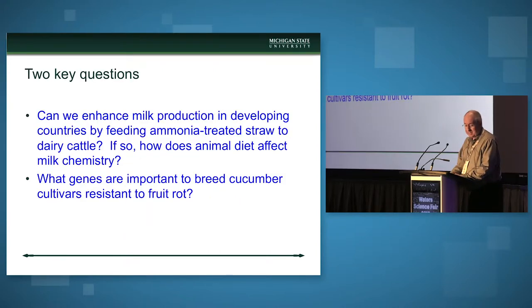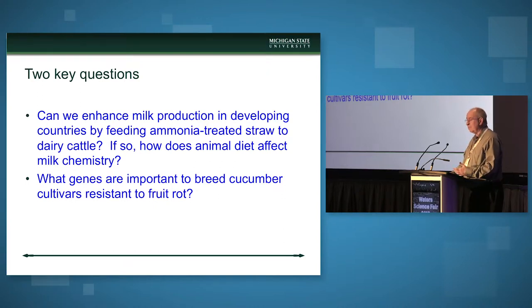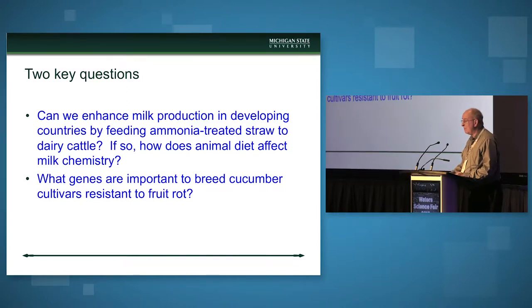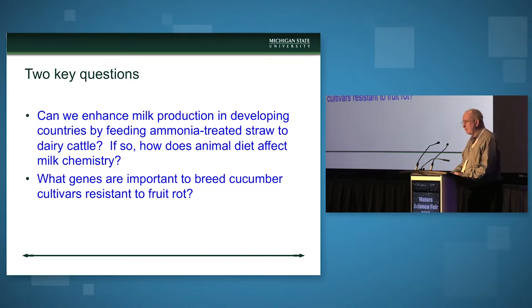I'm going to try to address two key questions today. The first question has to do with enhancing milk production. In many developing countries, there are certain times of the year when cattle don't get the nutrition that they need. We're curious to know if we alter the animal feed and the nutritional content of the diet, how does that change milk chemistry? The second story is about cucumber and fruit rot.